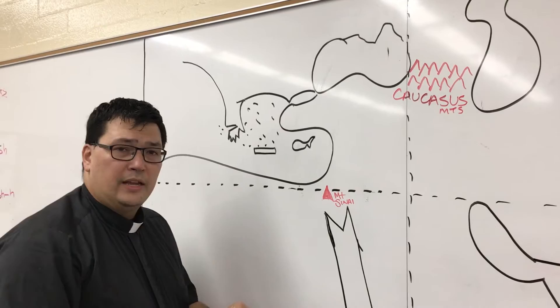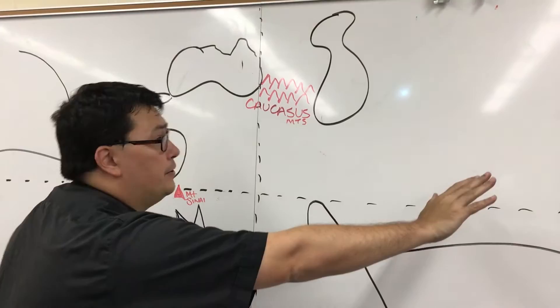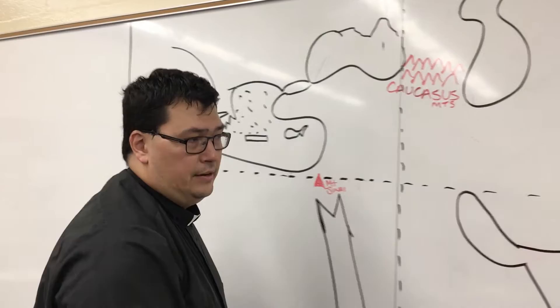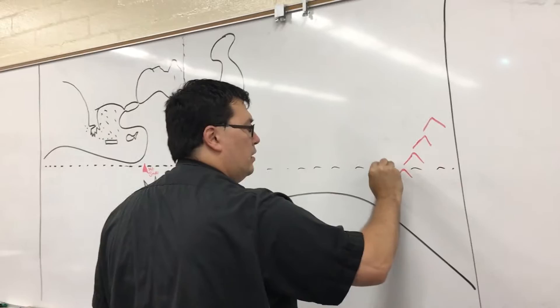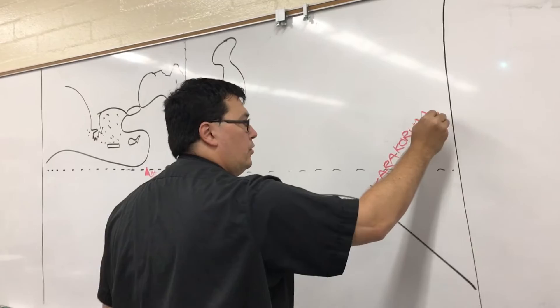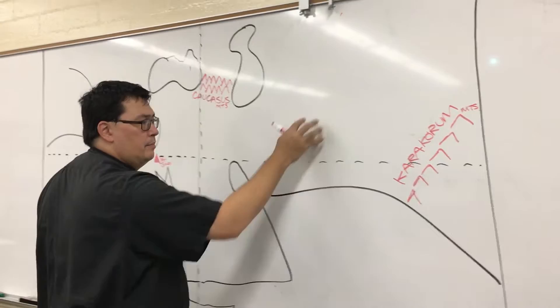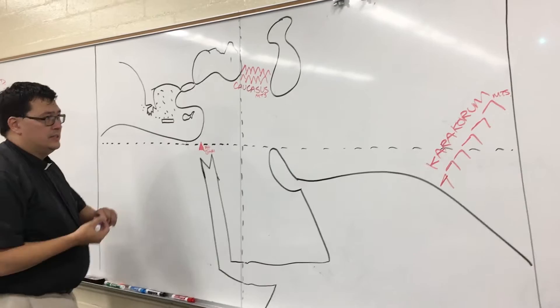The Caucasus Mountains. And this is where we get the word Caucasian. If you're from the east side of the Caucasus Mountains, you're Asian. If you're from the west side of the Caucasus Mountains, you're Caucasian. Our last set of mountains is over here in the east. And it sort of rises up from the ocean and goes north. And these are called the Karakoram, K-A-R-A-K-O-R-U-M. These are the Karakoram Mountains. And they traditionally form the border between India and the Middle East. So those are our mountains.